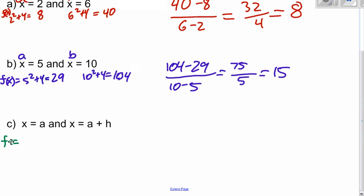So if you plug in a for f of x, we would have a squared plus 4. If we plug in a plus h, it would be a plus h squared plus 4. We need to foil this out to simplify. So it would be a squared plus 2ah plus h squared plus 4.